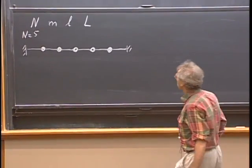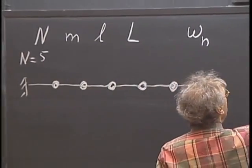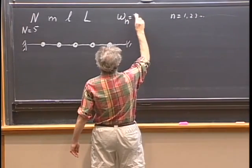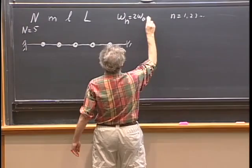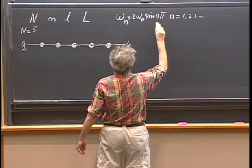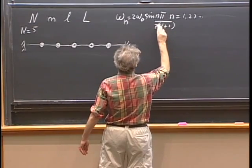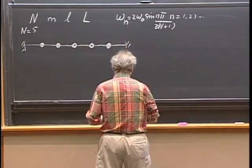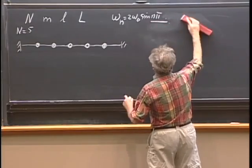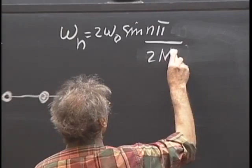The general result is that the normal mode frequencies in terms of n, n being 1, 2, 3, etc., equals 2 omega₀ times the sine of n pi divided by 2n plus 1. I don't want you to remember that — I certainly don't — but I will need the 2n plus 1 today.